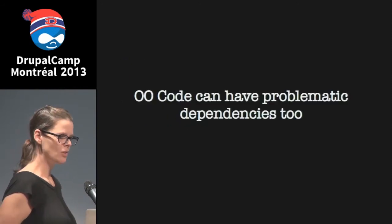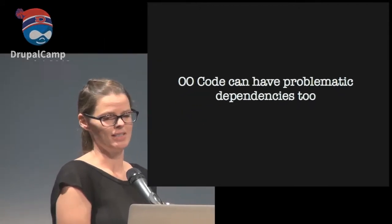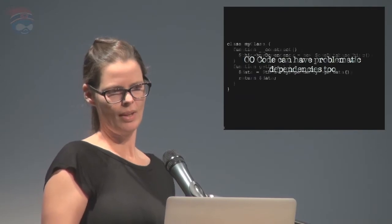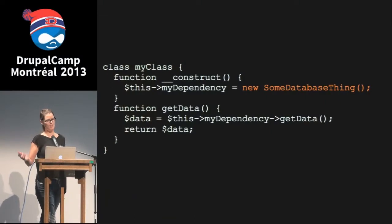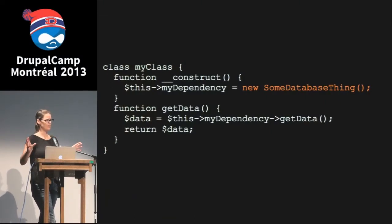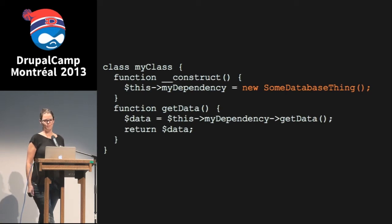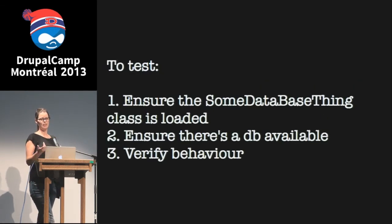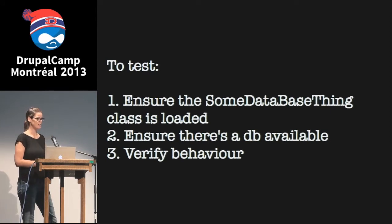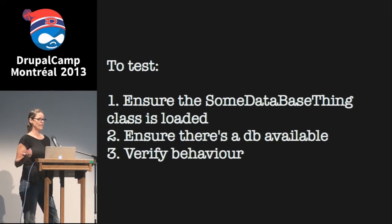Object-oriented code can also have problematic dependencies. Imagine you have a class that relies on another class — say, a database connection. If you want to test that class, you have to ensure that the other class it depends on is loaded, that a database is available, and then you can verify the behavior.